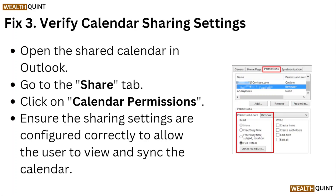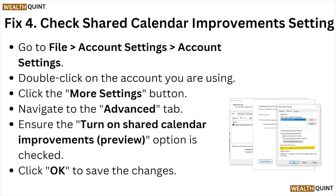Fix number four: check the shared calendar improvement settings. Go to File, Account Settings, and double-click on the account you are using. Click on the More Settings button, navigate to the Advanced tab, and ensure the Turn On Shared Calendar Improvements option is checked. Click OK to save the changes.